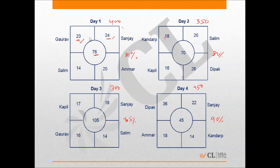Looking at the first figure/diagram, the four corner figures give the percentage of lines typed by the top four typists — those who typed the maximum number of lines on day one. The first typed 24% of total lines, second 23%, third 20%, and fourth 14%. This means none of the remaining three typists typed 14% or more. The middle circle gives total lines typed by the bottom three typists. Adding the four corner figures gives 81%, meaning the top four typed 81% and the remaining 19% were typed by the bottom three.